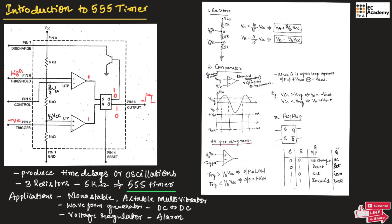This process will continue: if we apply a low pulse across the trigger, the output will be high; if we apply a high pulse across the threshold, the output will be low. This produces a continuous oscillating signal with high and low pulses. When Q is 1, it is applied as input to the transistor, causing the transistor to discharge. We will understand this discharging operation when we study the 555 timer as a monostable and astable multivibrator.